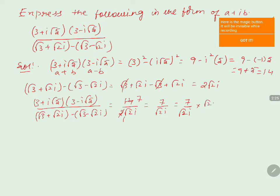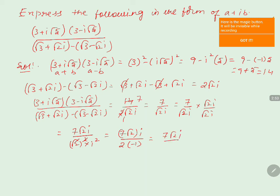Multiplying root 2i in the numerator and denominator: 7 into root 2i in the numerator, and root 2 into root 2 is root 2 whole squared, and i into i is i squared equals minus 1. So we get 7 root 2i divided by 2 into minus 1, giving the final answer as 0 plus minus 7 root 2 by 2 into i.